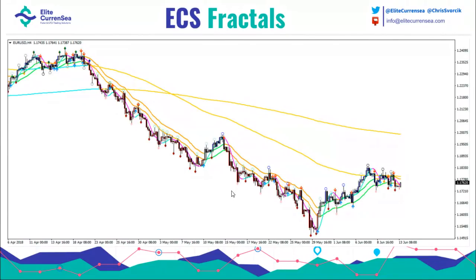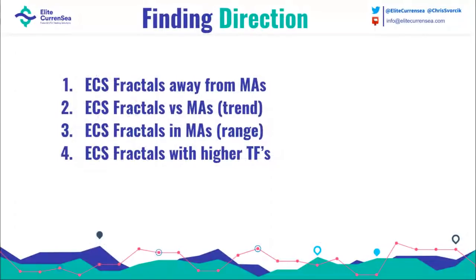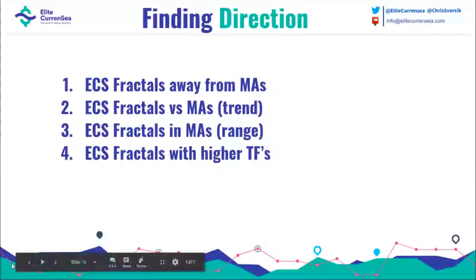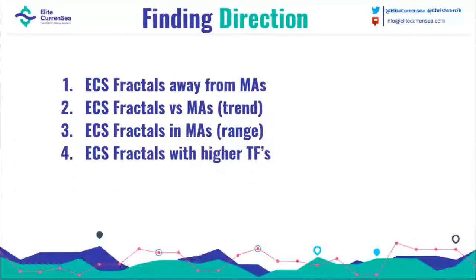This is a key crucial thing that I haven't discussed in any other webinar. It's really a crucial part of understanding the importance of fractals, but also moving averages — this combination. The core of today's webinar covers: ECS fractals that are away from moving averages, ECS fractals bouncing at the moving averages, ECS fractals in the moving averages, and ECS fractals on different timeframes. I'm going to use live charts because I like the flexibility of looking at current charts rather than screenshots.